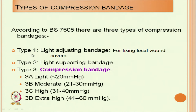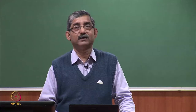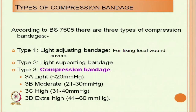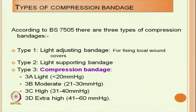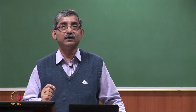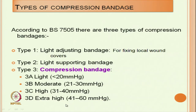Type 1 is a light adjusting bandage for fixing local wound cover. Here the pressure level is not that important — the importance is that the local wound has to be covered. We need very low pressure, otherwise it may severely damage the wound area. Type 2 is a light supporting bandage where we need a slightly higher level of pressure, but pressure application is not that critical.